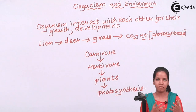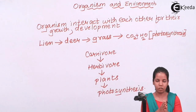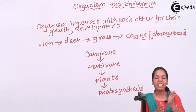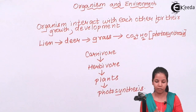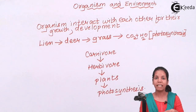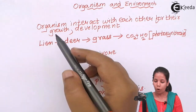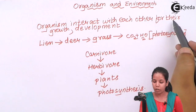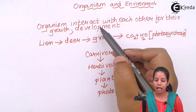In the last part we started how organisms and environment interact with each other, and how interaction of one species is dependent on another species for survival, growth, and nutrition. So the definition of interaction among organisms: organisms interact with each other for their growth and development. For example, lion is dependent on deer for its nutritional needs.